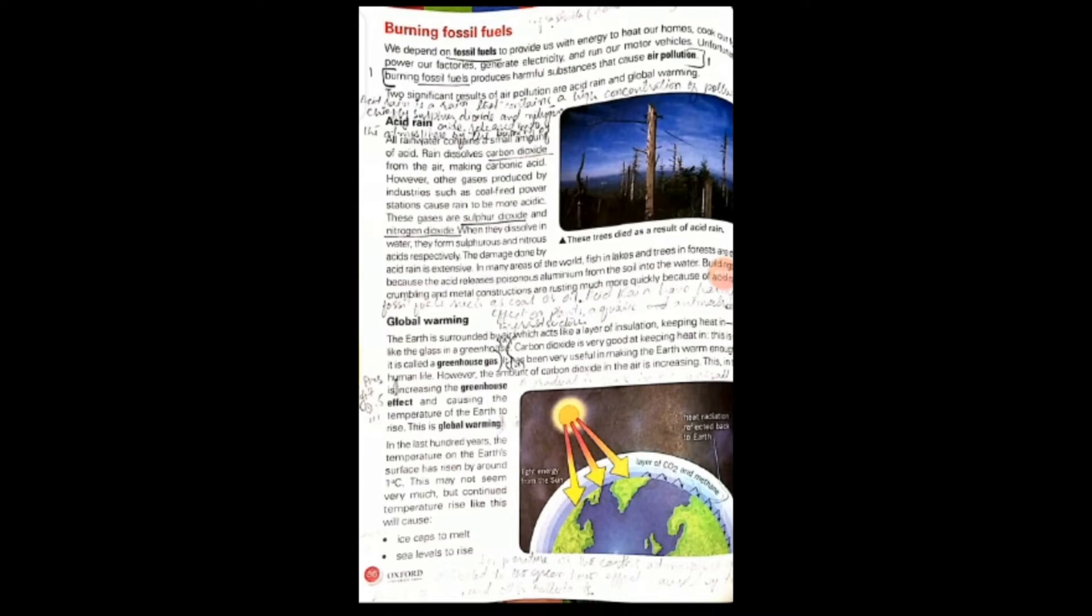What is acid rain? All rainwater contains a small amount of acid, but the concentration of carbon dioxide and different gases are increased in the air. That is continuously increasing. That will combine and bind with the water and fall down. This is called acid rain.